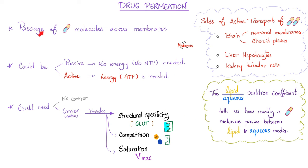Medications need to pass across membranes — this is the definition of absorption. This passage could be passive (no energy needed) or active (requires ATP). The passage could require no carrier or require a carrier. The moment you require a carrier protein, you will have structural specificity, competition, and saturation. Structural specificity means the key-in-lock model: the drug is the key and the receptor is the lock. When the key binds to the lock, you turn the key and the receptor produces its function. One medication can compete with another for the same receptor. And there will come a moment where all receptors are occupied — saturation.